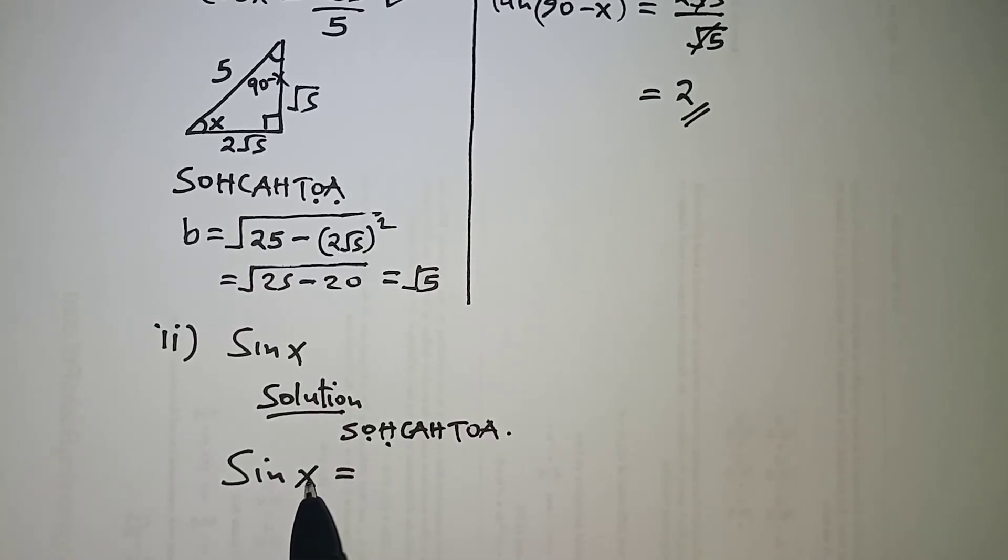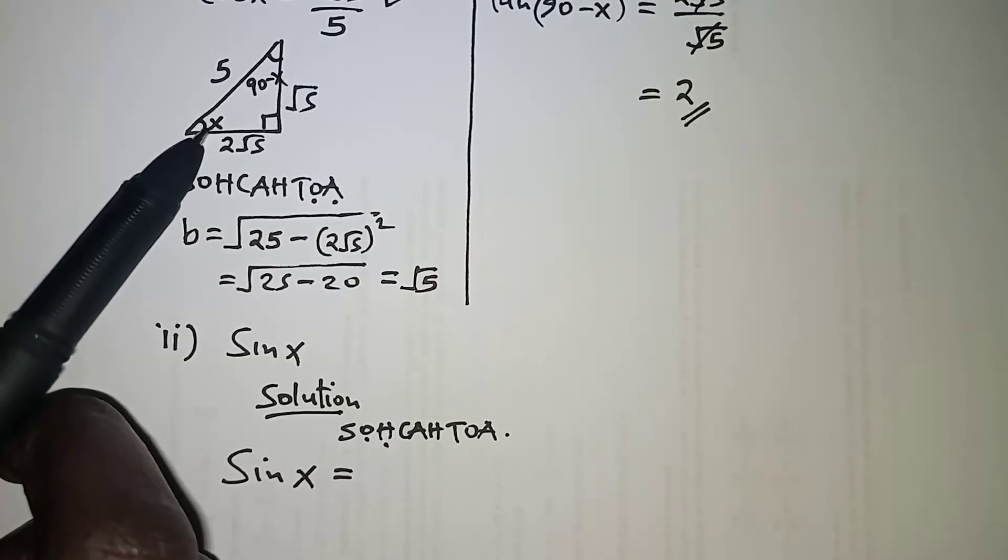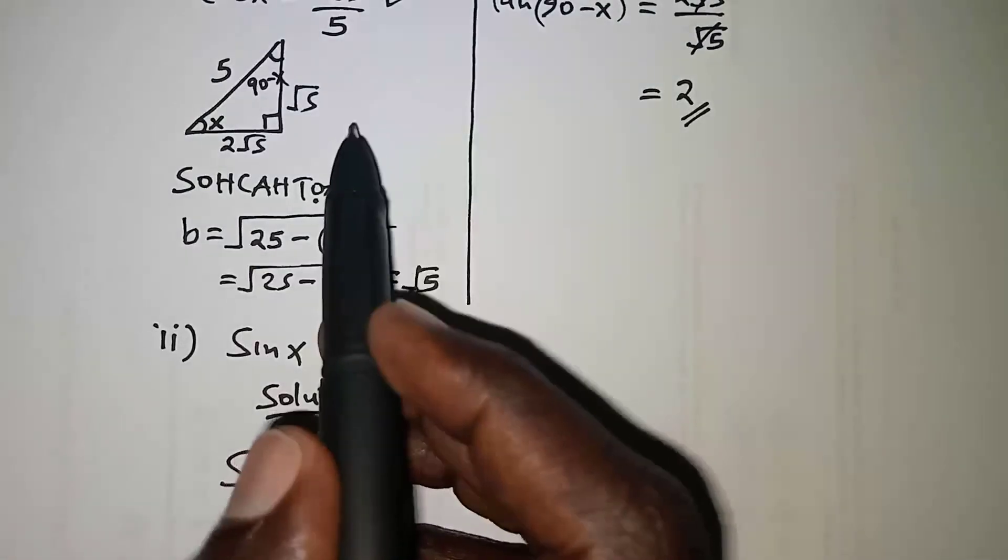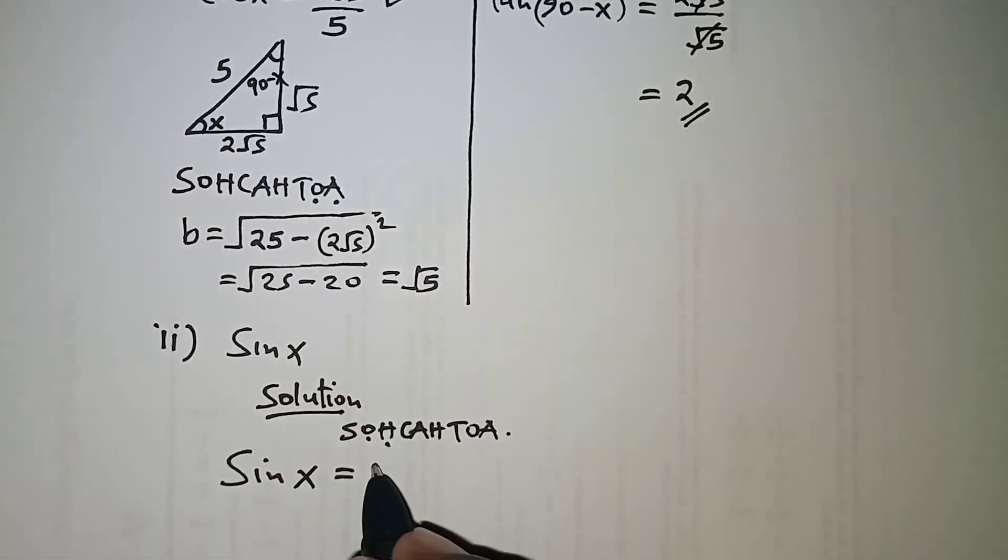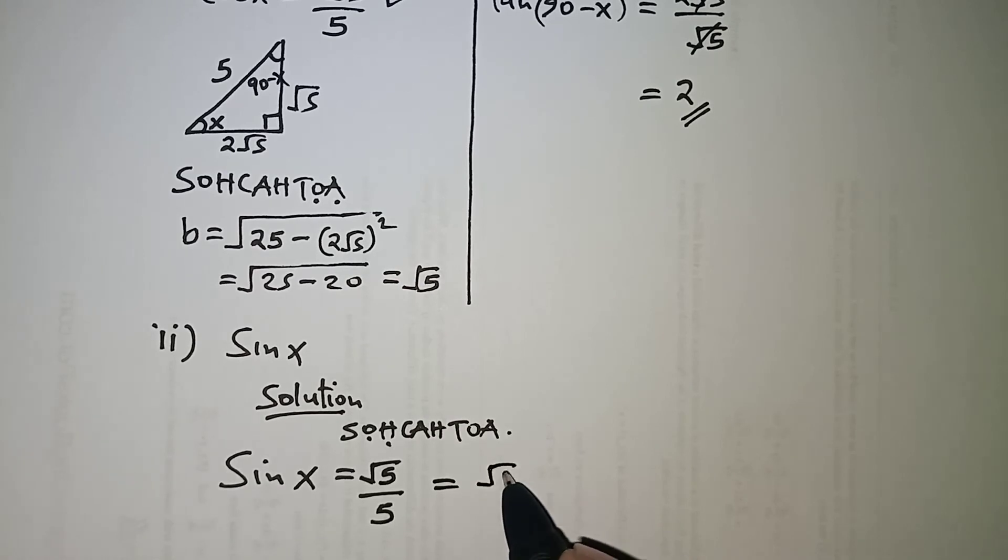Sine simply means opposite over hypotenuse. So we will have sine of x which is the opposite side with respect to angle x. Opposite side is root 5. So opposite root 5 all over the hypotenuse and the hypotenuse is 5. So that our answer becomes root 5 over 5.